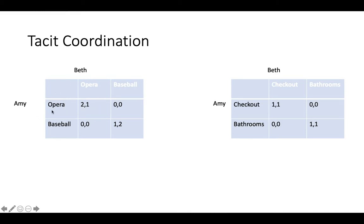Then there's the case of coordination with divergent interests, where the payoffs aren't exactly the same for both agents. Imagine Amy and Beth said let's go to the opera or a baseball game, and they lost their phones. They'd both prefer being together than apart, but Amy prefers the opera and Beth prefers baseball. This still relies on tacit coordination to get better payoffs, but the interests don't exactly align.